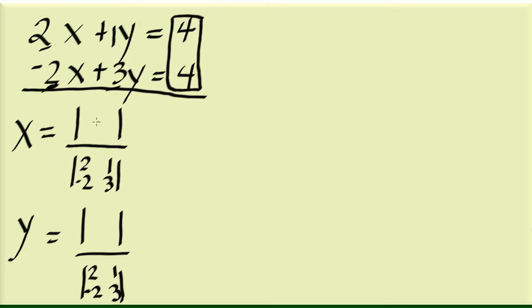Now let's complete the elements of our determinant for x. We're looking for the x value here, but we're not going to be using the coefficients of x. We're not going to use the 2 and negative 2 in our numerator for x. Instead, we're going to replace those two numbers with the constants 4 and 4.